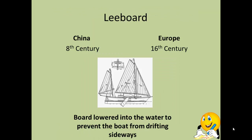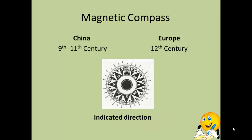The leeboard is another development — China developed it in the 8th century, while Europe didn't develop it until the 16th century. It's remarkably simple but incredibly effective: just a board lowered into the water to prevent the boat from drifting sideways. The magnetic compass is another — the Chinese developed it between the 9th and 11th century, while Europe got it only in the 12th century. When hundreds of miles from land, it's incredibly easy to become disoriented, and the compass made navigation much easier.